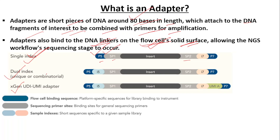The first part is the flow cell binding sequence — platform-specific sequences for binding the library to the instrument. Next is SP1 and SP2, which are sequencing primer sites — basically binding sites for the general sequencing primers SP1 and SP2.